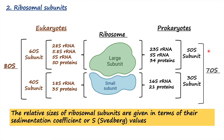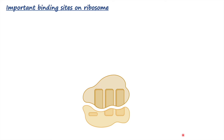In addition to the large and small subunits, the ribosome also has three important binding sites.